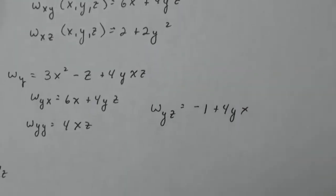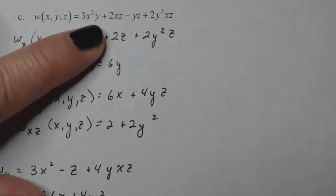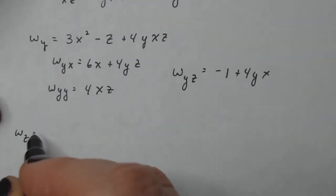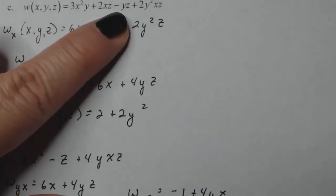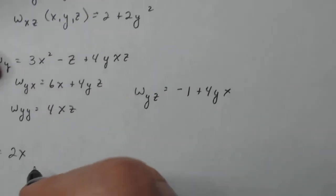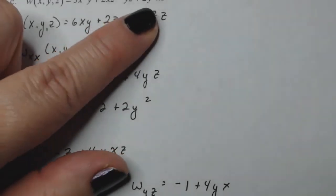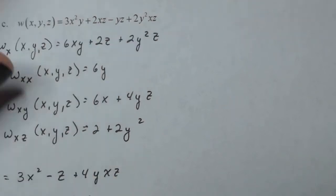All right, last but not least, let's do W sub Z. So I've got to kind of go back and forth here. There's no Z here. That should be two X and then here I should have a negative Y.